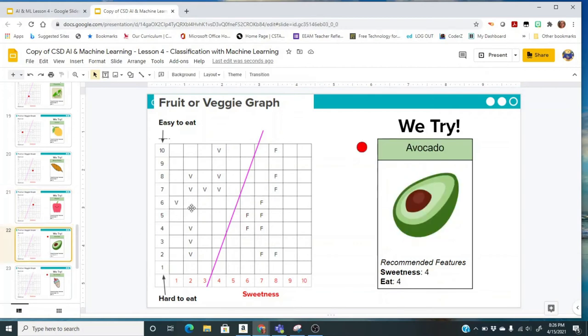Let's try avocado. Sweetness is at a 4 and eat is a 4. You can adjust the numbers to what you believe for avocado. According to my model, it was a veggie. And avocado is actually a fruit, just like some of the other ones. A lot of things that we might consider a vegetable, we might even find them in the vegetable section of the store, but technically they are defined as a fruit.